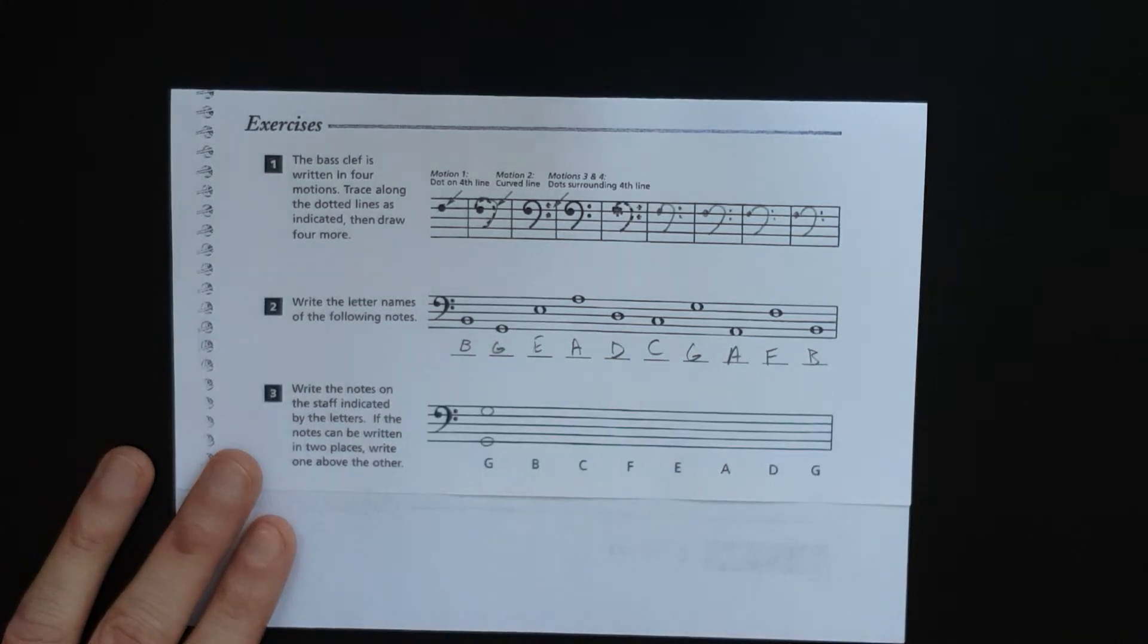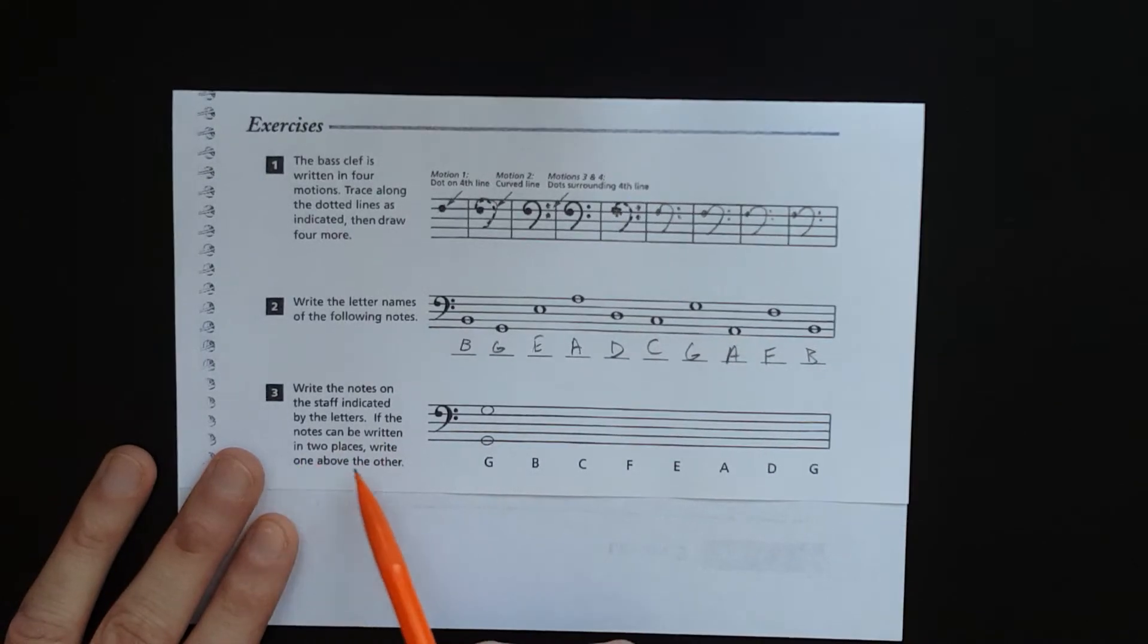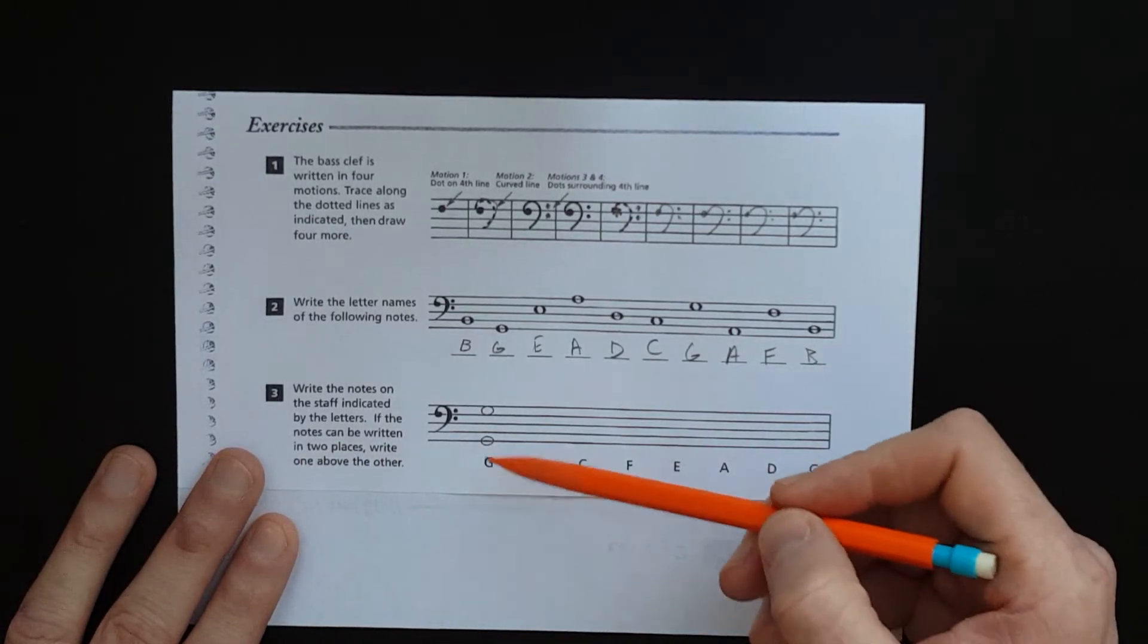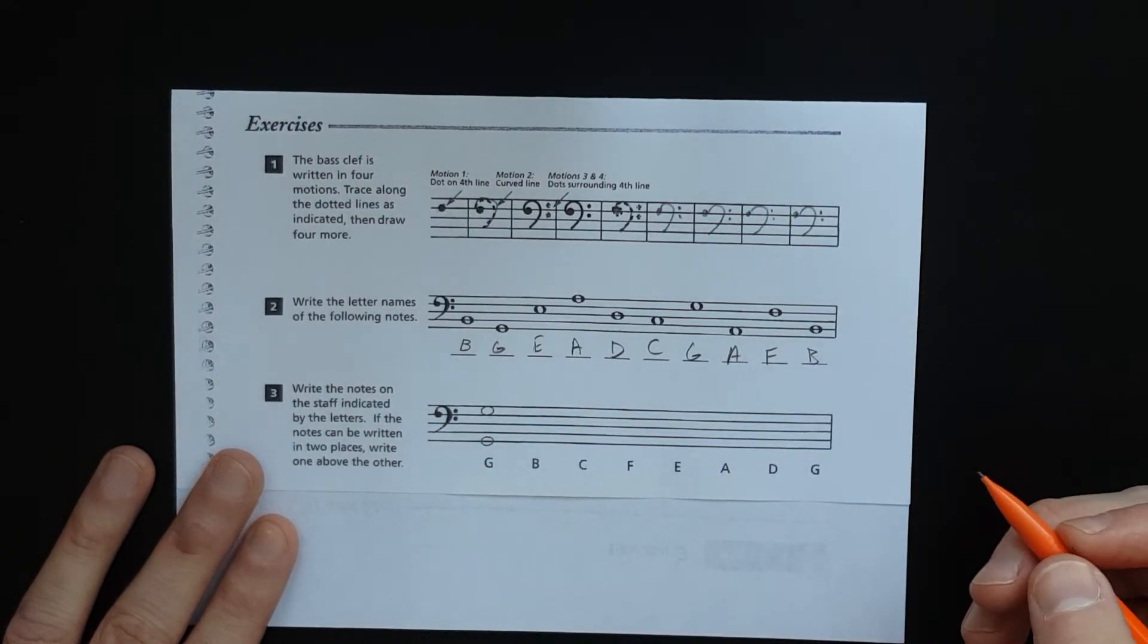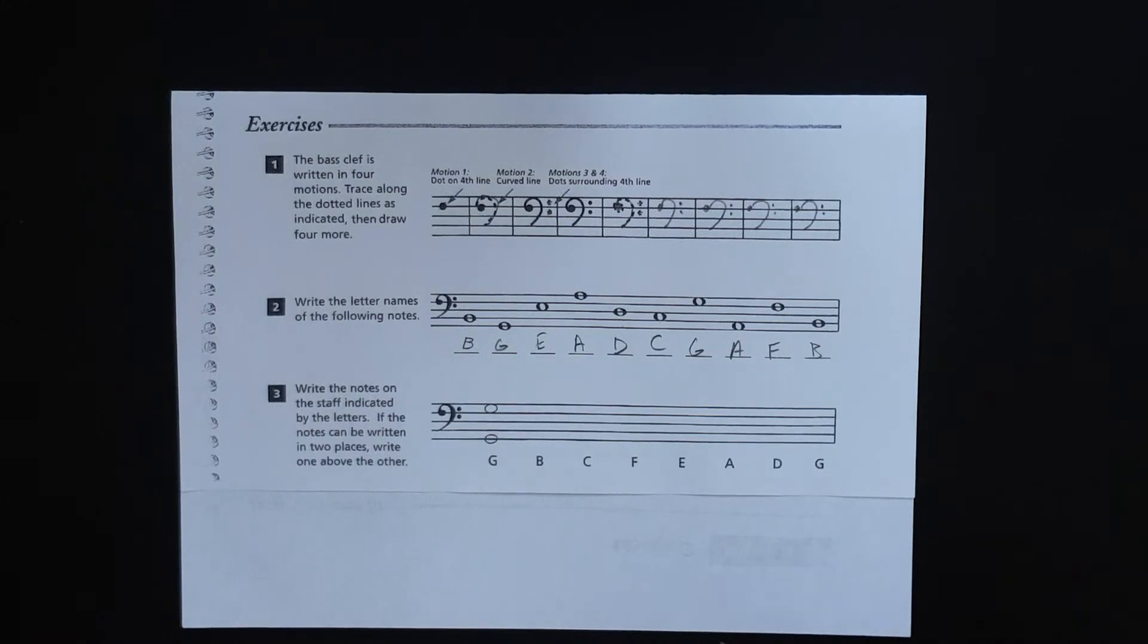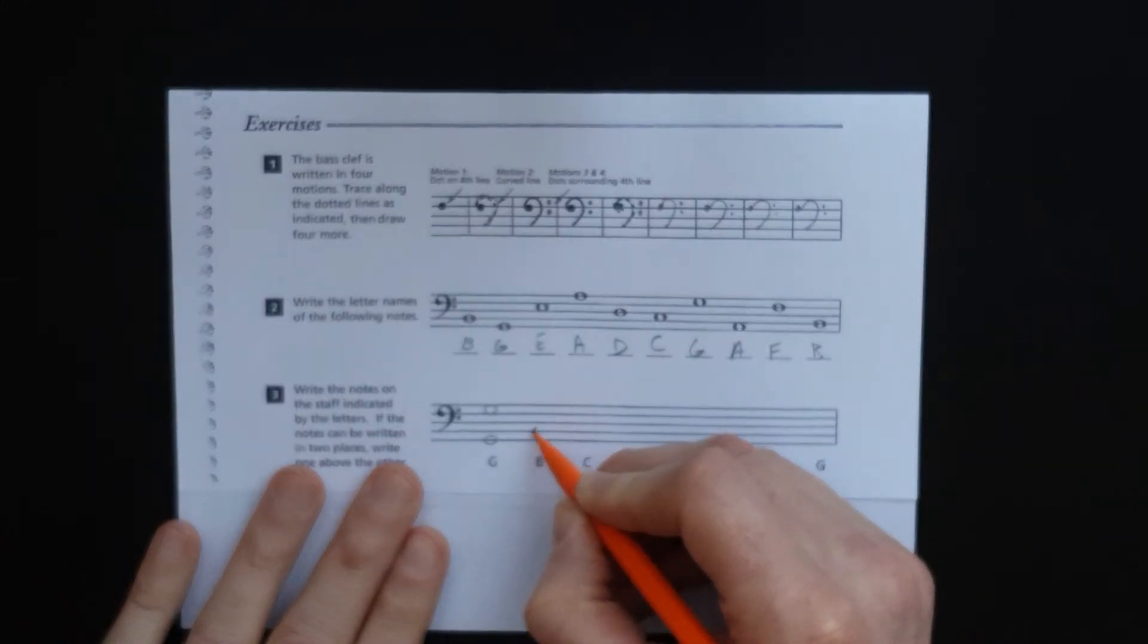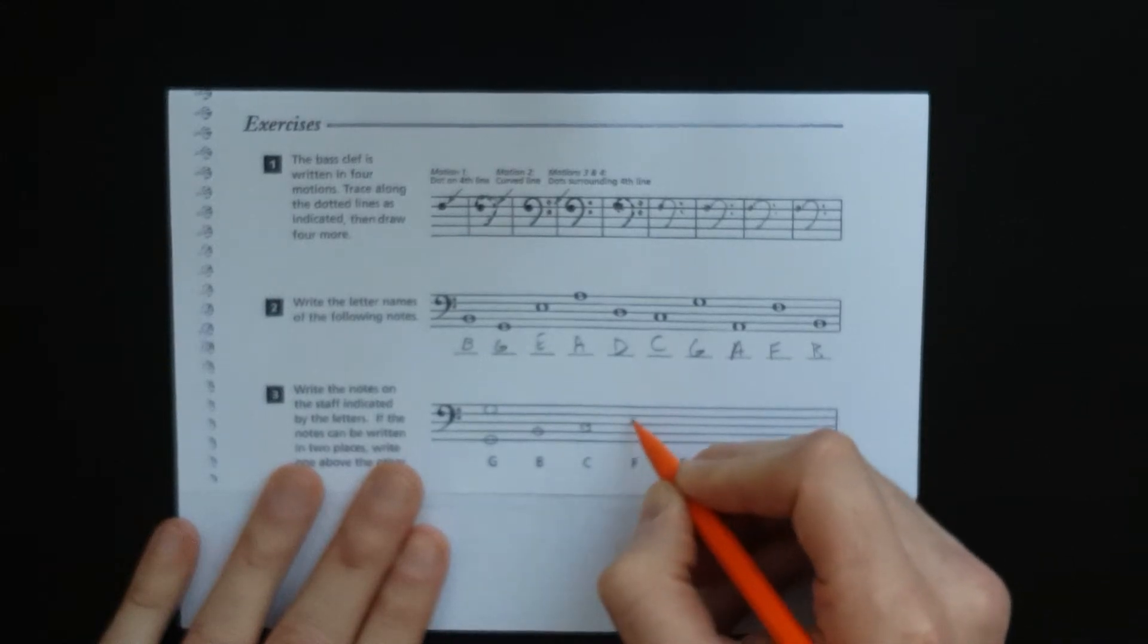Let's go ahead and write the notes on the staff indicated by the letters. If the notes could be written in two places, write one above the other. They already gave you G here, so we'll go to the next one, which is B. Then C—All Cows. Grandma Buys Dresses For All.